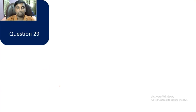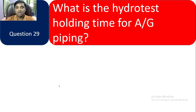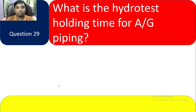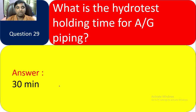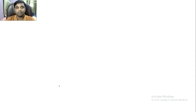Question 29: What is the hydro test holding time for above-ground piping? The holding time is 30 minutes for above-ground piping.